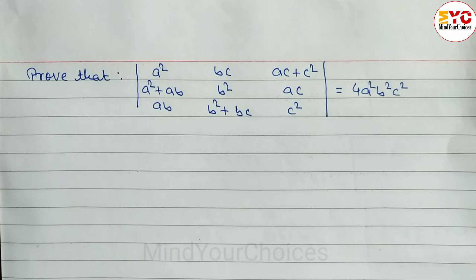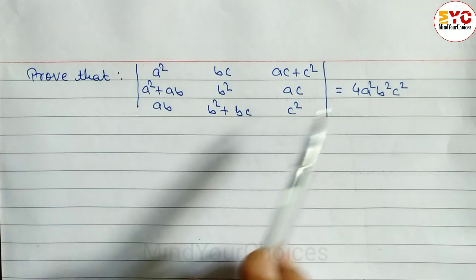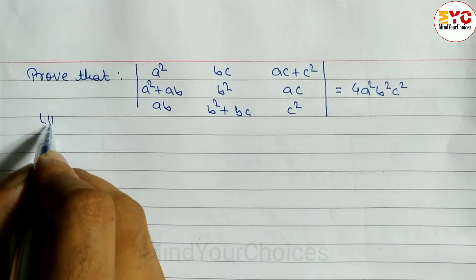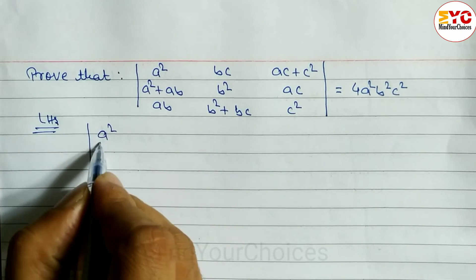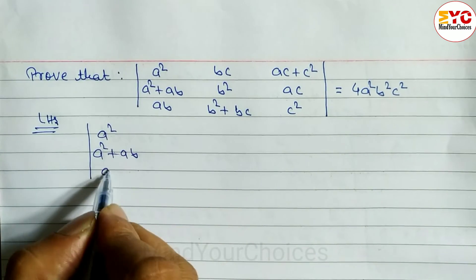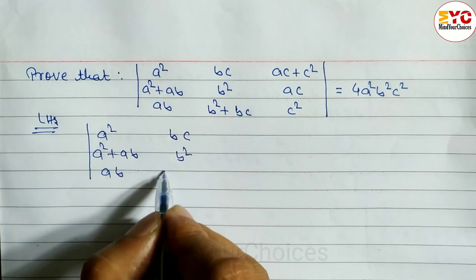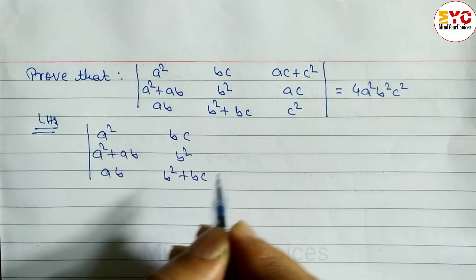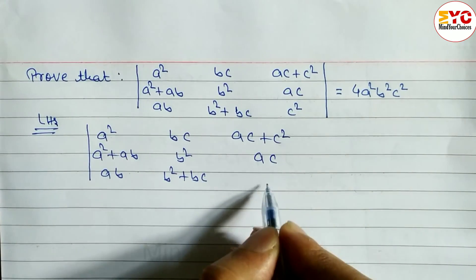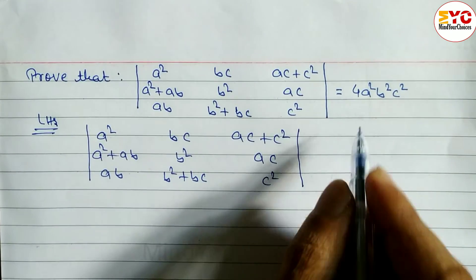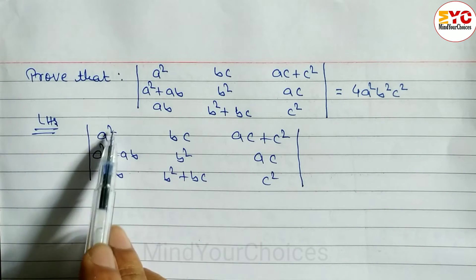This question is taken from Class 12 Business Maths. Using properties of determinants, we have to prove the given identity. Let's take the LHS: the first column has a², a²+ab, and ab; the second column has bc, b², b²+bc; and the third column has ac+c², ac, and c². We have to prove this equals 4a²b²c².